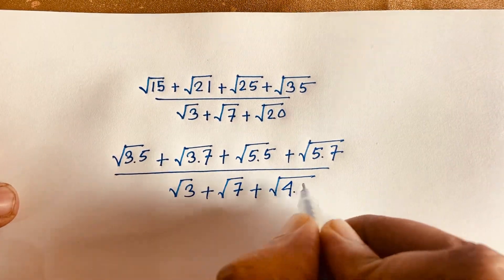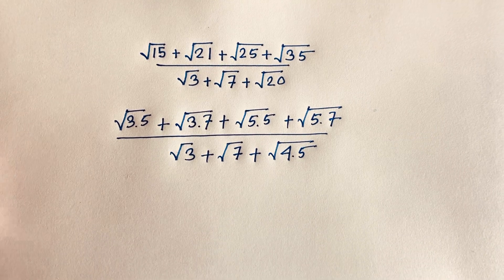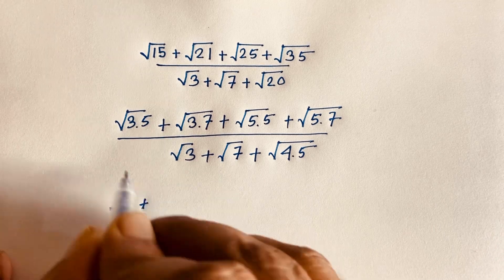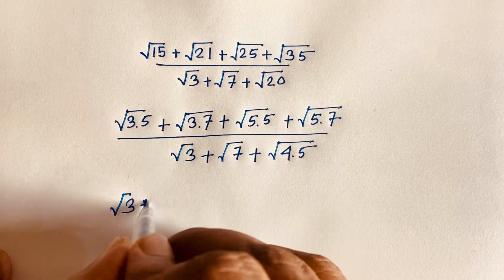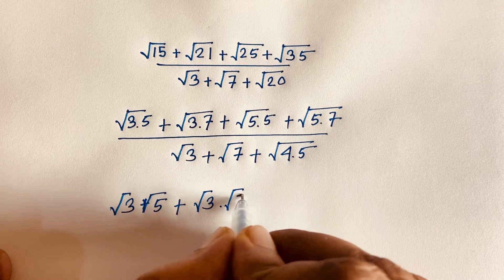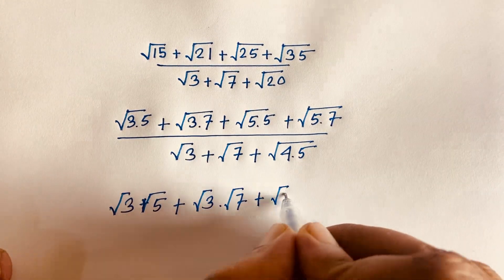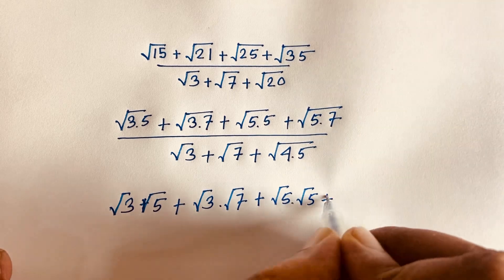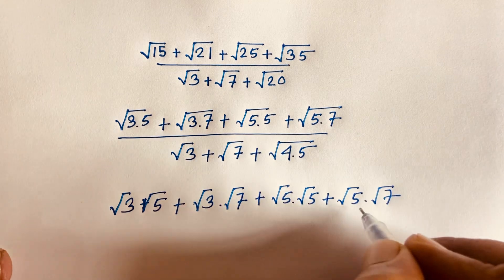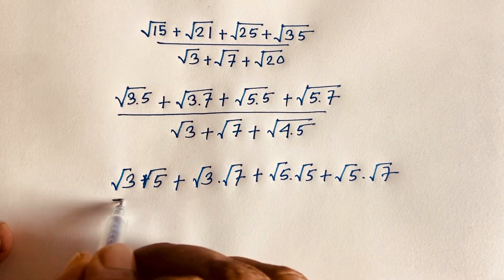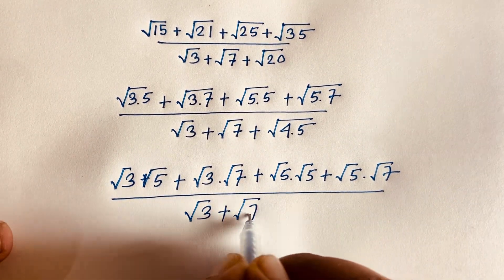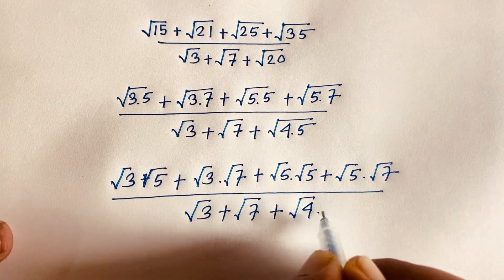Continuing, square root of 20 in the denominator becomes square root of 4 times 5. So in the numerator we have: square root 3 times square root 5, plus square root 3 times square root 7, plus square root 5 times square root 5, plus square root 5 times square root 7. The denominator is square root 3 plus square root 7 plus square root 4 times square root 5.